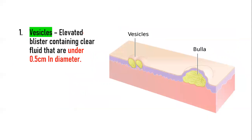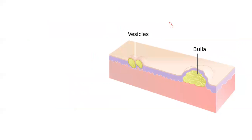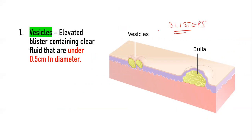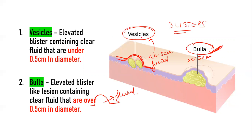Before we move into the variants of pemphigus, let us understand the different types of blisters. Blisters are of two types: vesicles and bullae. Whenever you have an elevation on the surface of the skin which is less than 0.5 centimeters and is filled with fluid, it is called a vesicle. If it is greater than 0.5 centimeters, it is called a bulla.